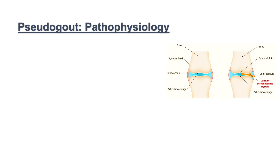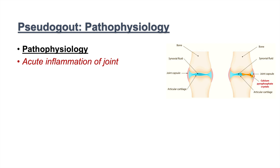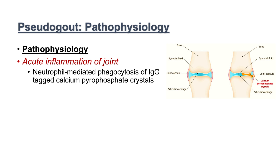The pathophysiology of pseudogout involves deposition of calcium pyrophosphate crystals in the joint. These crystals enter the joint space, leading to inflammation and pain. What happens is that IgG antibodies tag these calcium pyrophosphate crystals, and neutrophils then phagocytize these IgG-tagged crystals. This leads to a release of inflammatory cytokines, causing acute inflammation of the joint and pain for the individual.